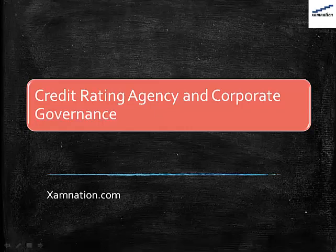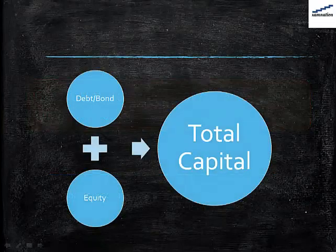Hello friends, welcome to examination. In this video we are going to talk about the credit rating agency and corporate governance — their role in corporate governance. Corporate governance in simple terms is about taking care of all stakeholders in the company. Stakeholders are those who are indirectly or directly having interest in it — equity holders, debt givers, customers — all are stakeholders. Here we will talk from the perspective of only the capital provider.